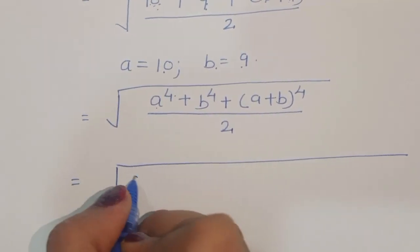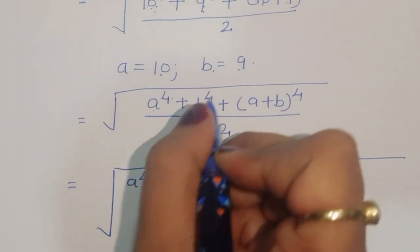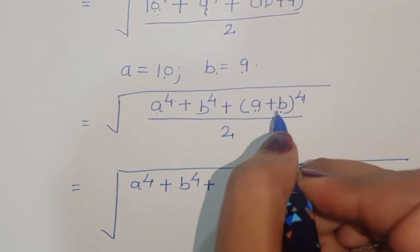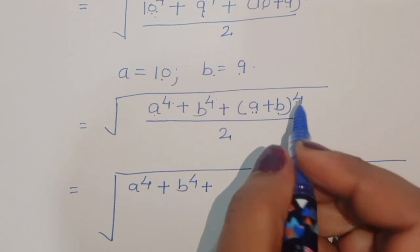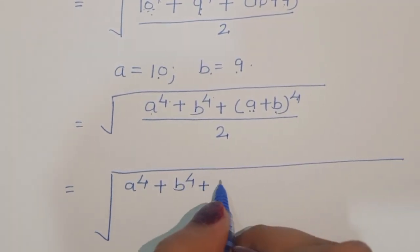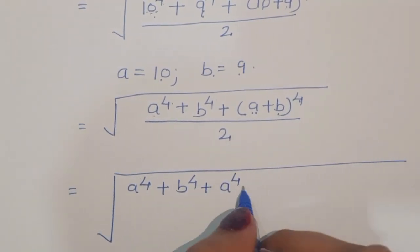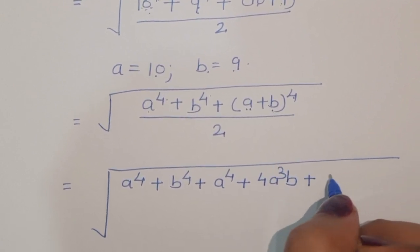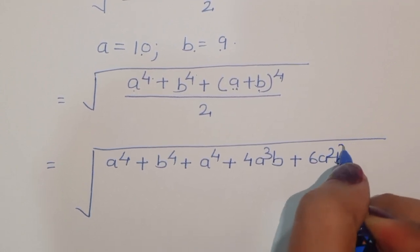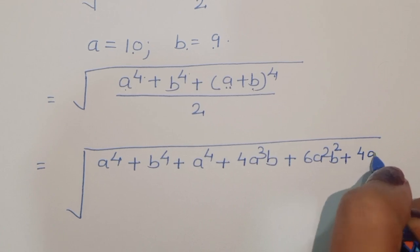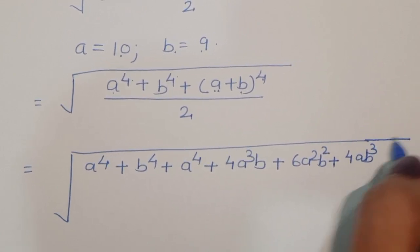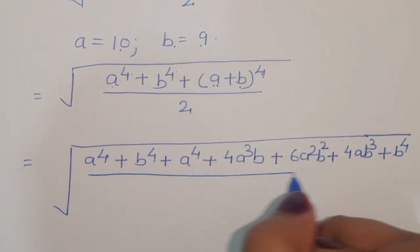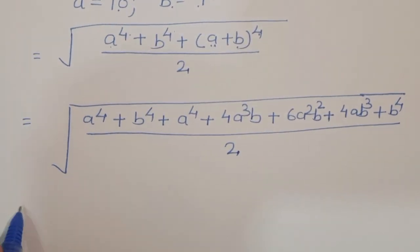Now we have a⁴ plus b⁴ plus (a+b)⁴ divided by 2. This is the term where we can use the formula. The formula for (a+b)⁴ is: a⁴ plus 4a³b plus 6a²b² plus 4ab³ plus b⁴. So we expand (a+b)⁴ and divide the whole expression by 2.